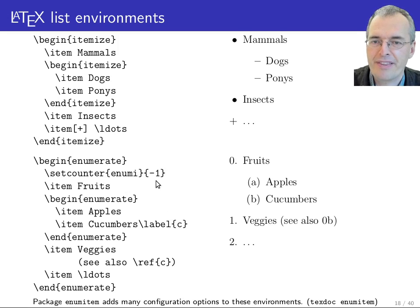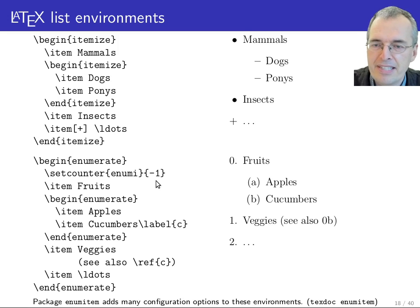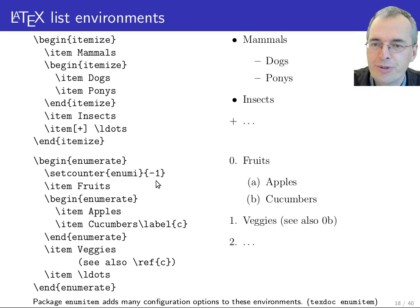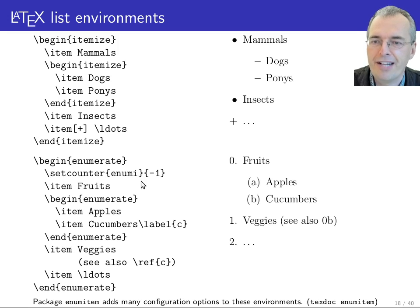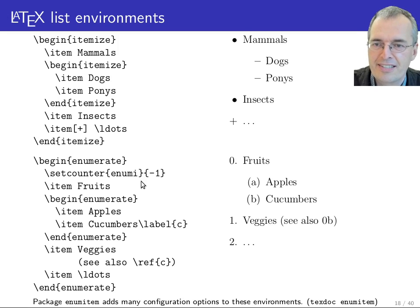A more typical use would be when you have some items enumerated in a text, then some intermediate text, and later want to continue the enumeration. You can set enum i to the value of the previous last item, so when it increments it will continue from there.